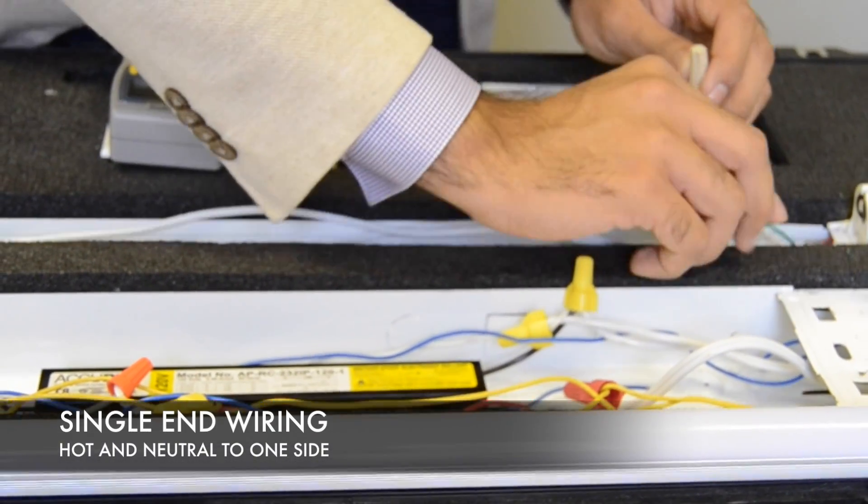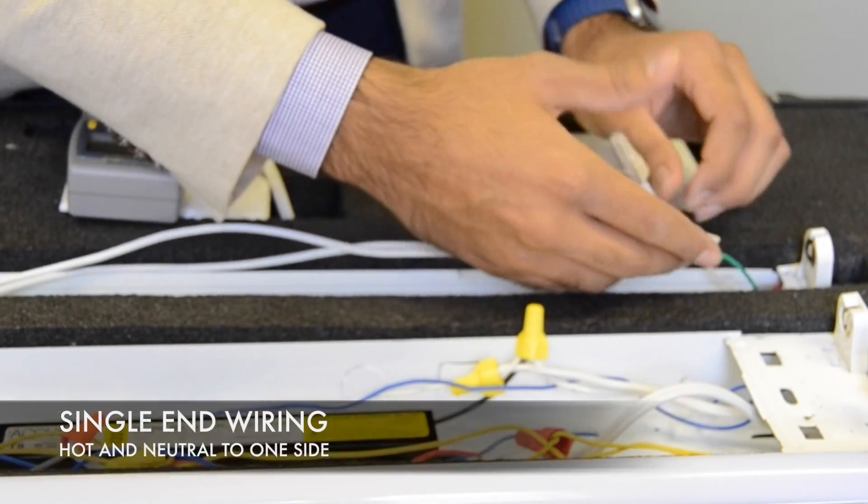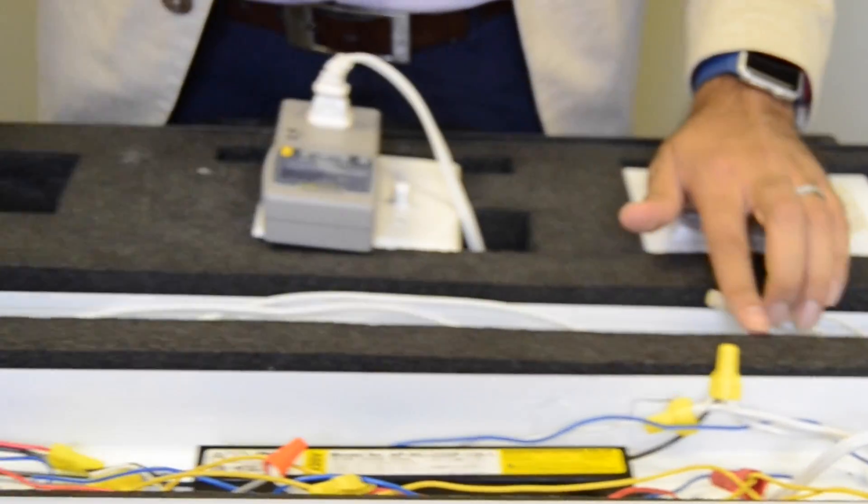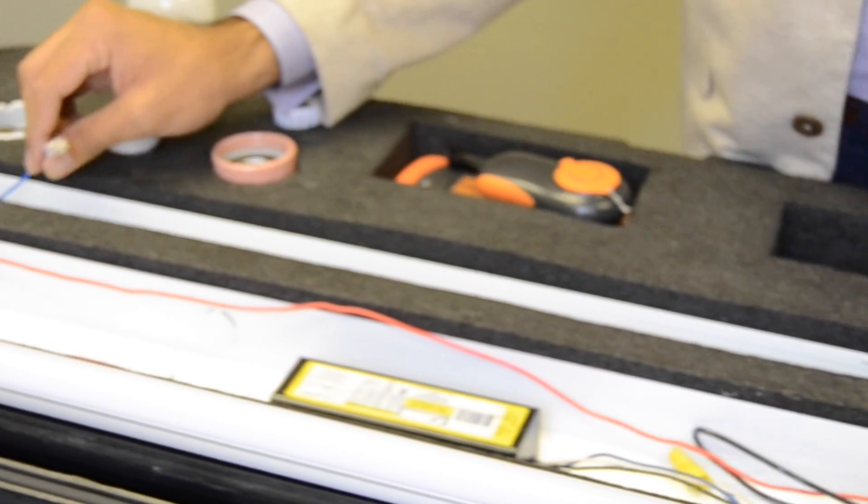Single end wiring: this wiring schematic is a hot and neutral going to an unshunted socket on one end and no power to the opposite end.